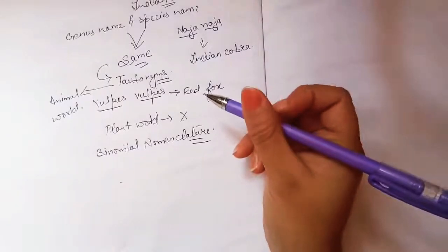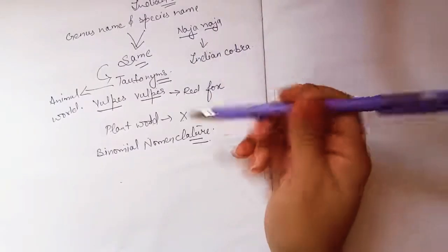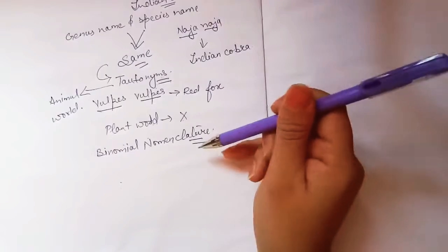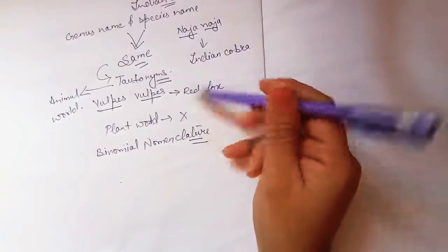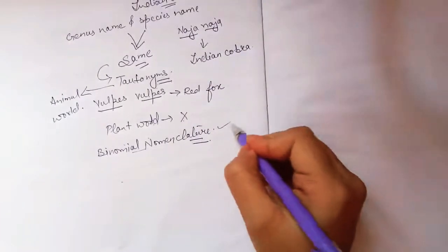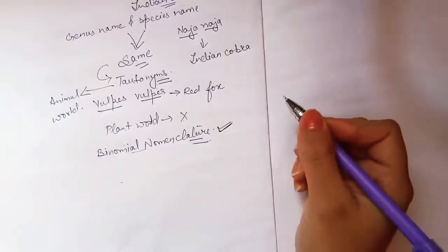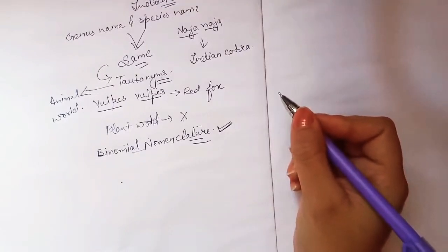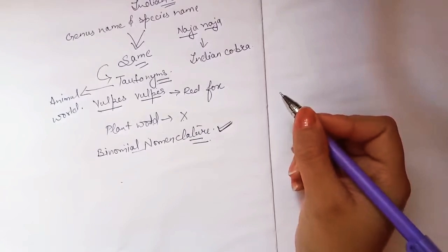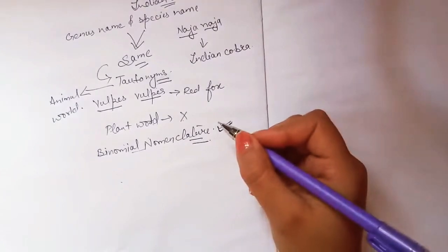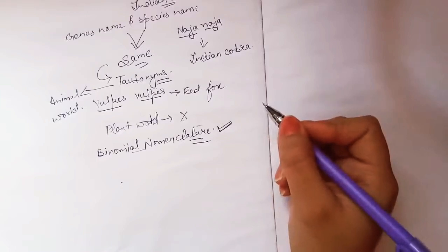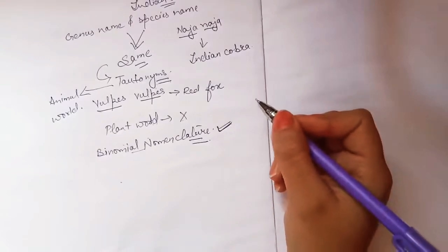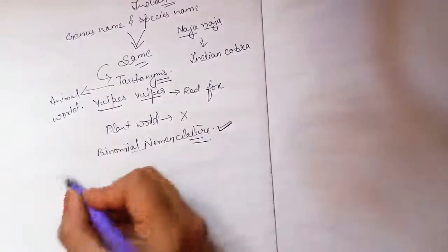Among trinomial nomenclature and binomial nomenclature, the most commonly used is the binomial nomenclature. I hope now you are able to understand nomenclature — how we scientifically name an organism and what the rules are to scientifically name an organism. Now we will continue with taxonomy, systematics, and taxonomic categories.